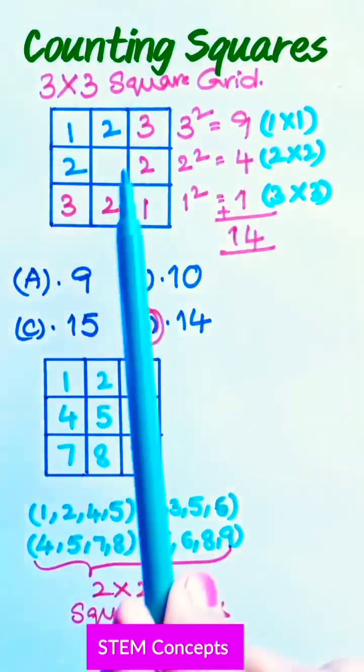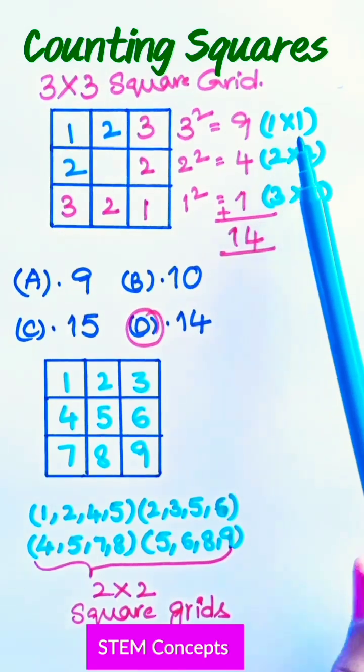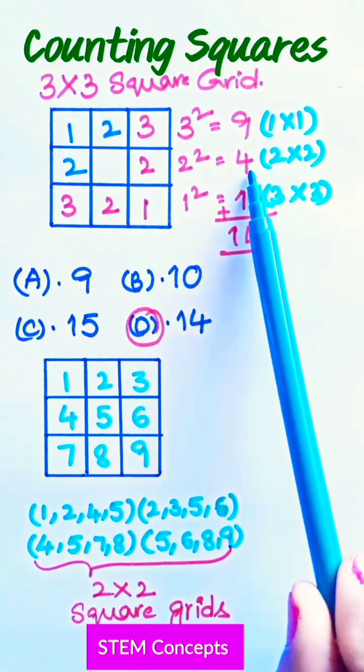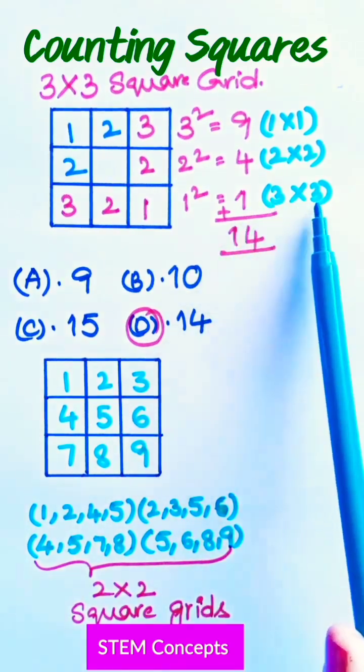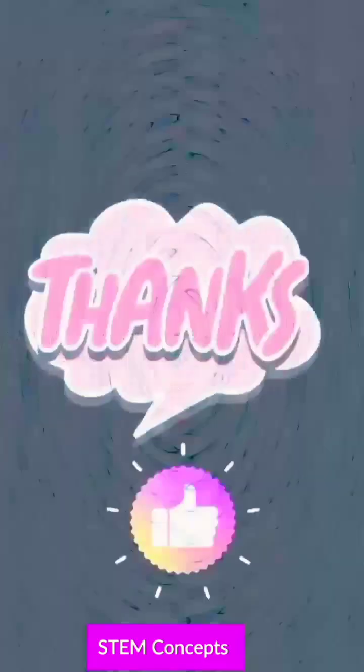Since it is a 3 by 3 square grid, there are 9 individual 1 by 1 square grids, and there are 4 2 by 2 square grids, and there is only one 3 by 3 square grid matrix.